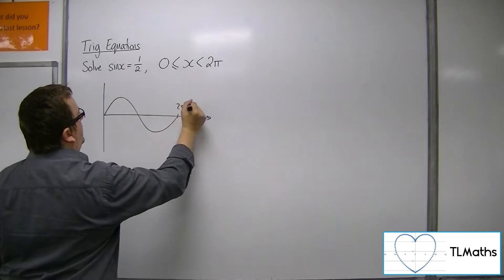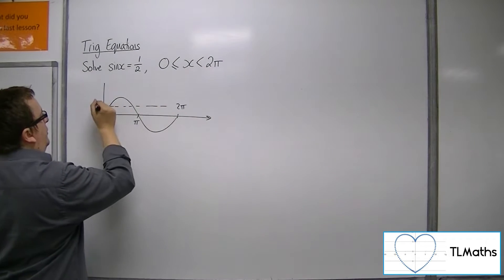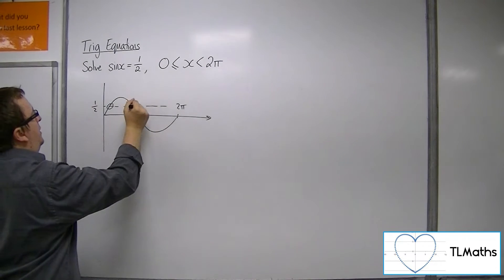So here's 2 pi, there's pi. One half will be a horizontal line that crosses your sine curve twice.